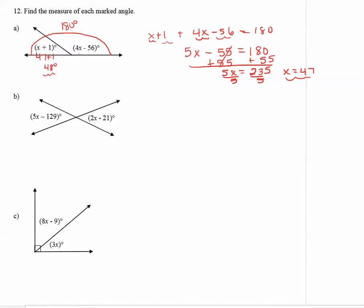For the angle on the right, its expression was 4 times x minus 56. So we get 4 times 47 minus 56. And 4 times 47 minus 56 is 132 degrees.